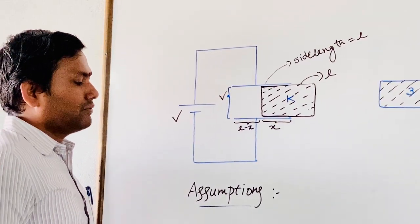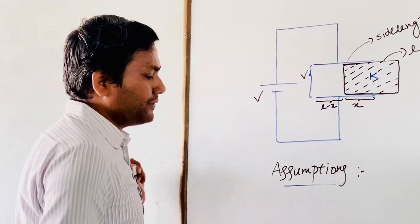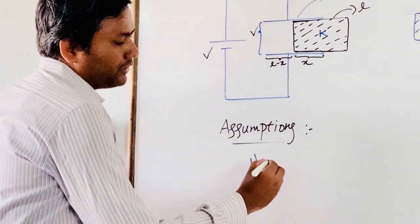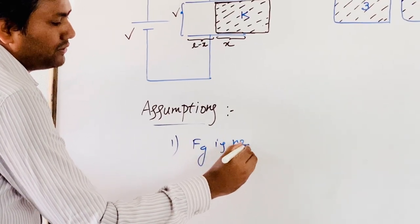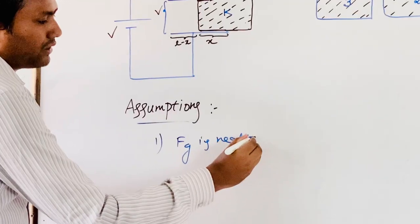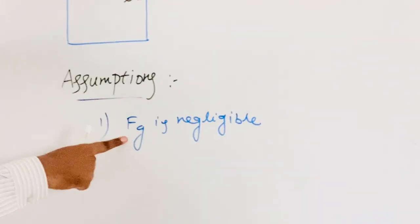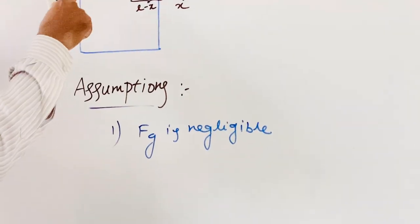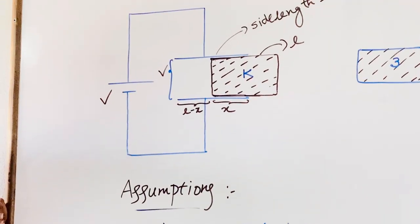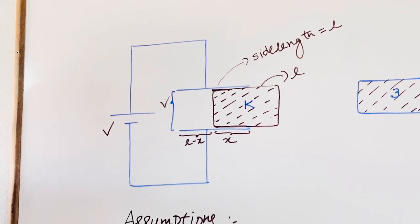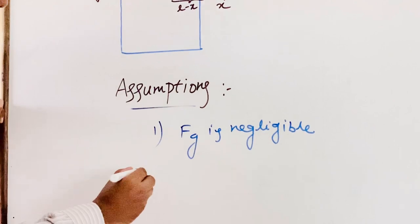In this discussion, we will make two important assumptions. The first assumption is that Fg — gravitational force — is negligible. So through this process, we will assume gravitational force does not exist, or even if it exists, we are assuming it is negligible.